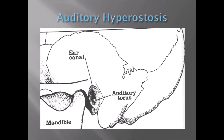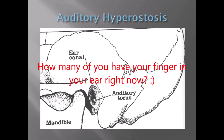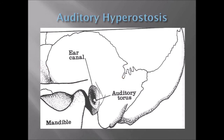Auditory hyperostoses - this is a little bone within the ear canal, also called the auditory meatus. We'll have this little growth of bone here; they can happen anywhere around this opening. You may or may not notice it. If you feel inside your ear canal and feel a little bump, that may be an auditory hyperostosis. There is some anecdotal literature that they form from deep diving in cold water, but there's a lot of speculation there.